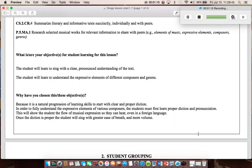The reason I have chosen these objectives is because it is a natural progression of learning skills to start with clear and proper diction. In order to fully understand the expressive elements of various composers, the students must first learn proper diction and pronunciation. This will show the students the flow of musical expression so they can hear, even in a foreign language. Once the diction is proper, the student will sing with greater ease of breath and more volume.